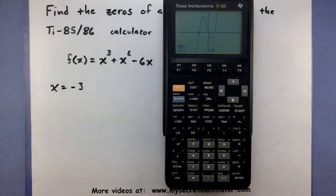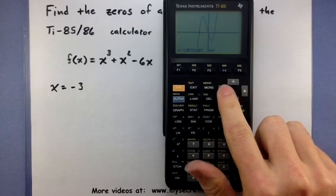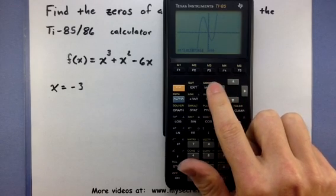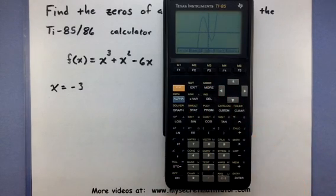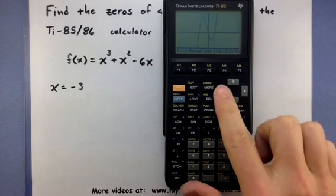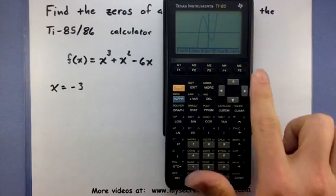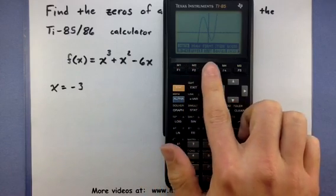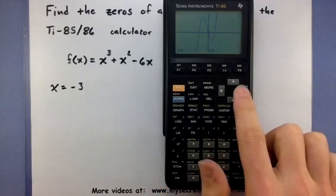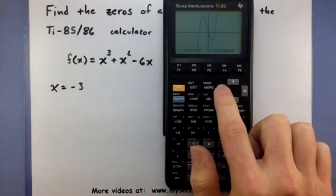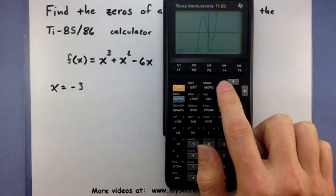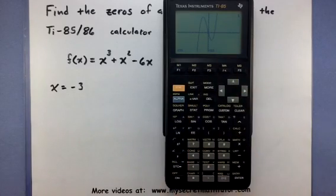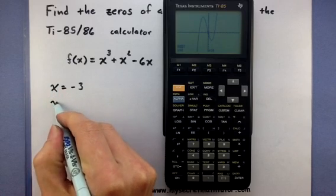Let's go through that one more time. Bring up our menu options by pressing graph, more, select the first option for math, then the third option for root, and move this cursor as close to one of the zeros as you want. This one looks like it's actually right at zero. Press enter, and sure enough, it's at zero.